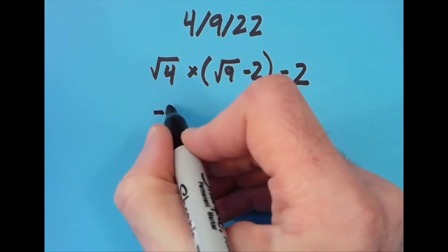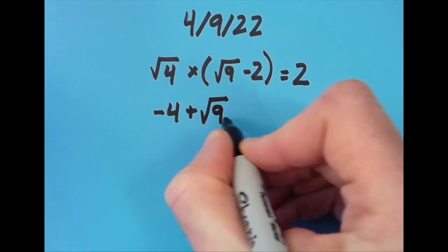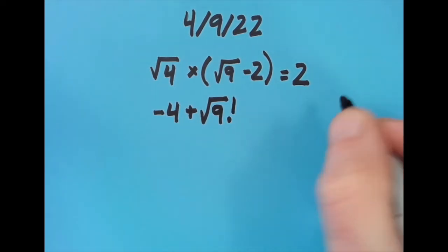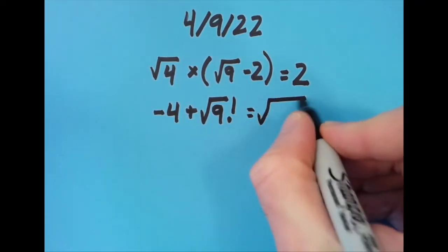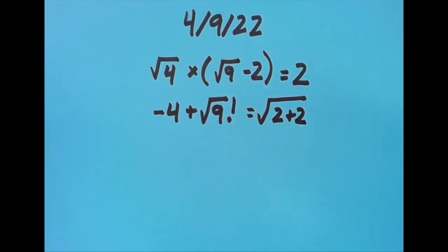So I moved it over to the left one and got -4 + √9! = √(2×2). This exclamation point is a mathematical symbol meaning factorial, and I explain what that is in the description.